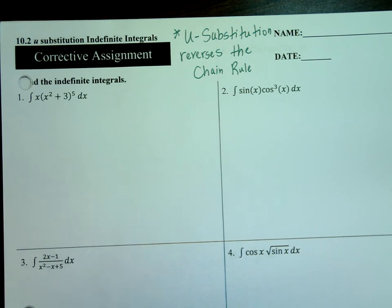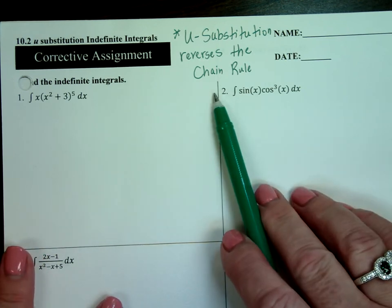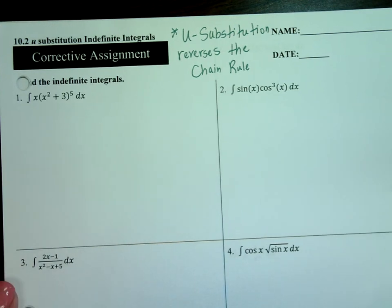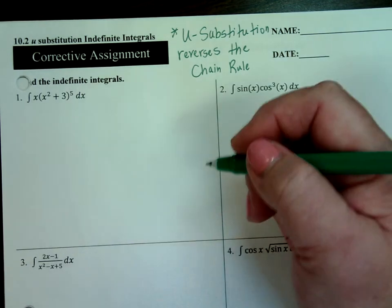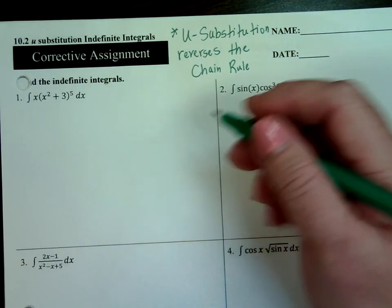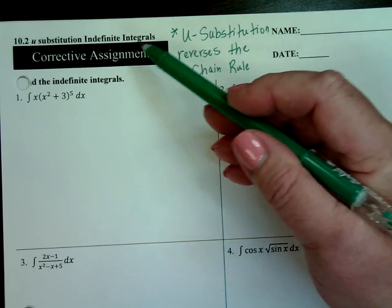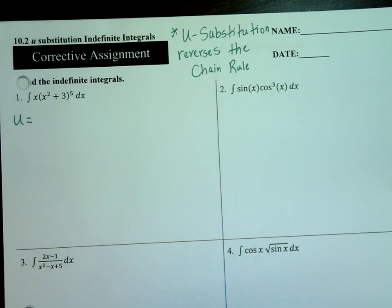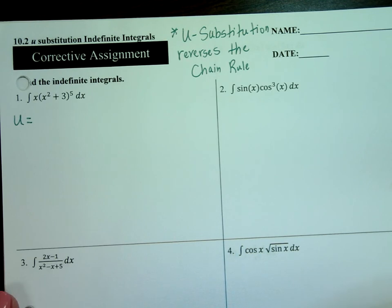Somebody who developed that software had to have known calculus to be able to do it. So those are the integration applications. Right now we're in the weeds of methods to find integrals, but there are bigger applications out there. So with integration by u-substitution, something's got to be the u that you're substituting in there. The u is usually the ugliest thing — I'm looking for ugly.